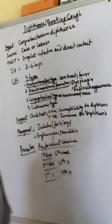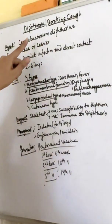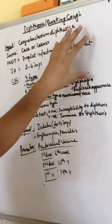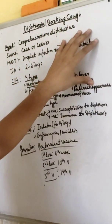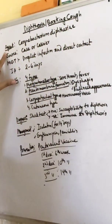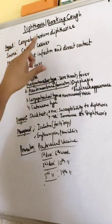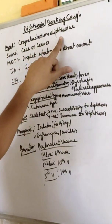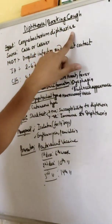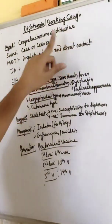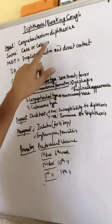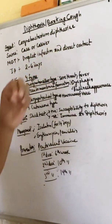Namaste everyone. Now we are going to discuss about diphtheria, which we also call barking cough. The causative agent is Corynebacterium diphtheriae, which is a gram-positive rod. The source is a case or a carrier.